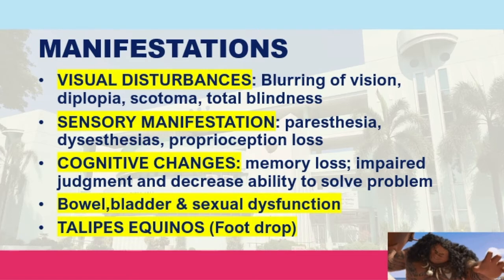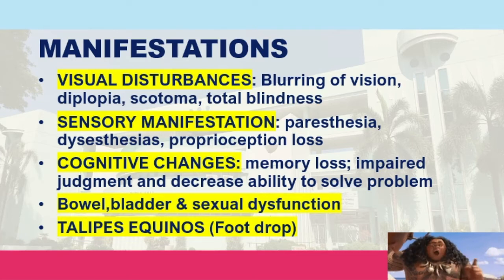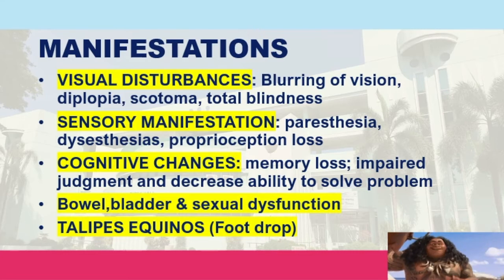Dysesthesia is an abnormal sensation usually described as painful, burning, prickling, or aching. Patients also manifest proprioception loss, meaning they are unable to detect or identify their current position. Since the brain is involved, cognitive changes occur including memory loss, impaired judgment, and decreased ability to solve problems. Bowel, bladder, and sexual dysfunction are also expected, related to demyelination. Talipes equinus or foot drop may also occur.